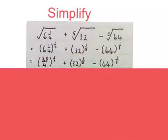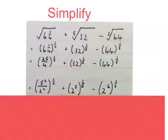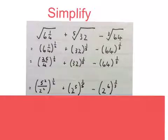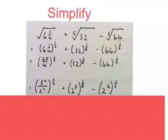Then I write this as an improper fraction and keep the other two. Then we prime factorize all these big numbers. The 25 becomes 5 squared. The 4 becomes 2 squared. 32 becomes 2 to the power of 5. 64 becomes 2 to the power of 6. You can do this prime factorizing with your calculator — go and look at the video that says prime factorizing with my calculator.